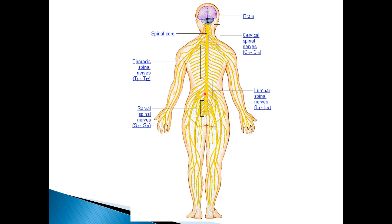Let's look at the sacral area for example. You can see that these nerves branch off the spinal cord at the bottom and go down our legs. These nerves are responsible for sending messages from your brain to your leg muscles to allow you to move your legs, and they also receive information from the skin in your legs and send that up to your brain so you can tell if someone's touching your leg.